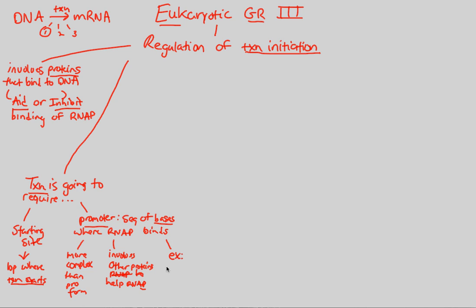A basic example is a sequence known as the TATA box — T-A-T-A box. It's a very clear, concise, predictable sequence of about 25 to 35 base pairs that are just TA repeating. They're located upstream from the starting site. The point of this TATA box is that it represents a promoter region where RNA polymerase recognizes a good place to attach, because other proteins will be present there to help RNA polymerase very easily attach onto the promoter and thus begin transcription at the starting site.